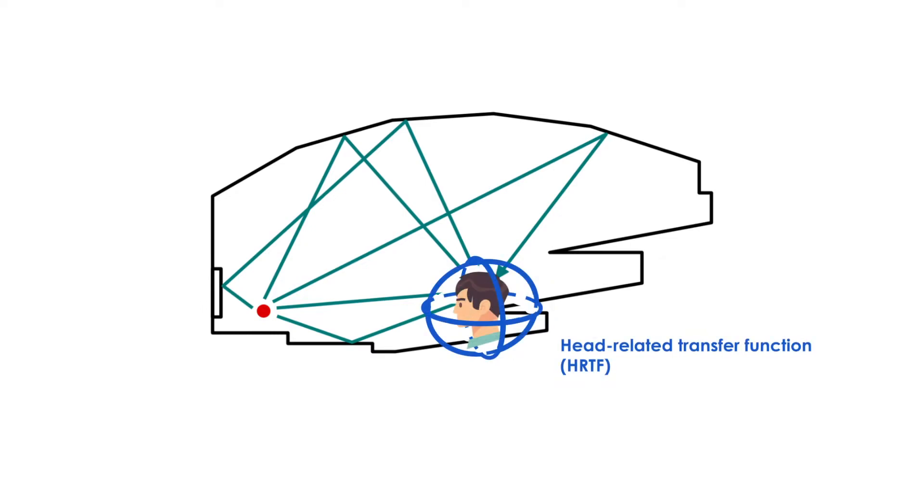For simulated rooms, a head-related transfer function, or HRTF, is applied on the reflections arriving at the receiver. This HRTF is, essentially, a pair of filters describing the frequency and phase response at each ear, depending on direction of sound arrival. For example, a sound coming from your left will be better perceived by your left ear than your right ear, as your head creates a shadowing effect especially at high frequencies.